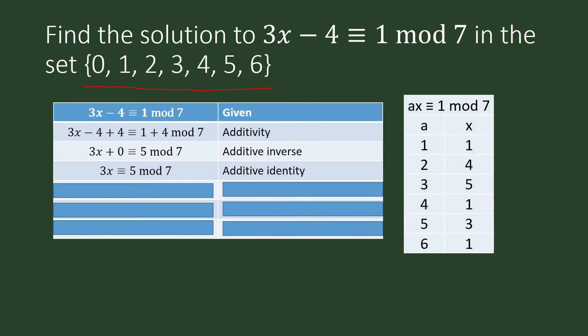We shall now multiply something to 3x. What must we multiply to both sides of our congruence equation so that we can cancel that 3? What is the multiplicative inverse of 3?